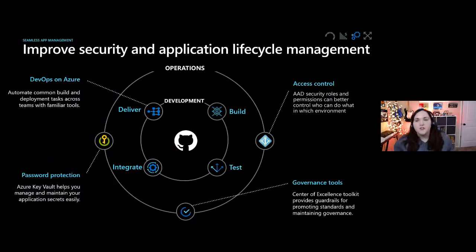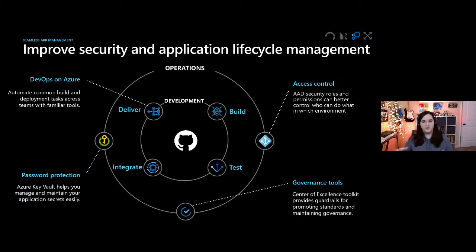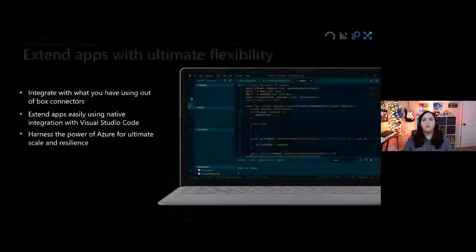We also have built-in security and application lifecycle management. With the Power Platform, we can integrate within Azure DevOps to automate common build and deployment tasks. We can integrate with Azure Key Vault to keep passwords protected, use Azure Active Directory for security roles and permissions, and we have a rich set of governance tools. If you're deploying the Power Platform at scale, we have something called the Center of Excellence, which provides guardrails, standards, and maintenance for governance of your Power Platform solutions.